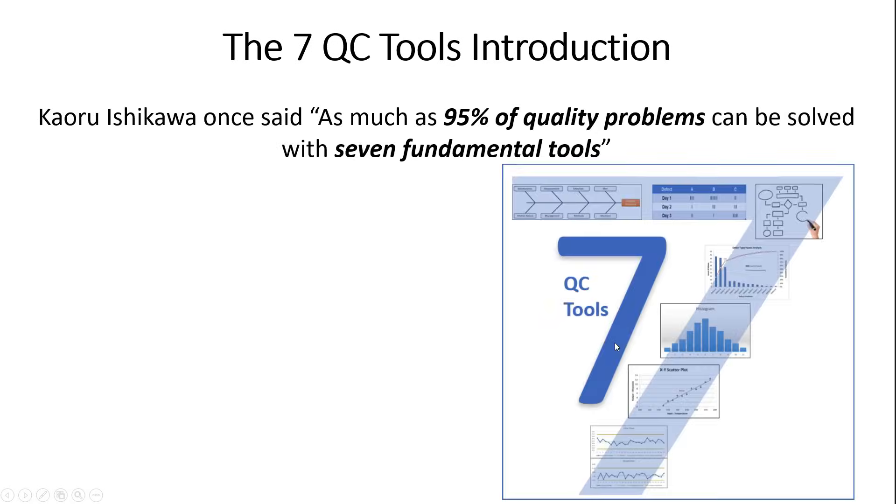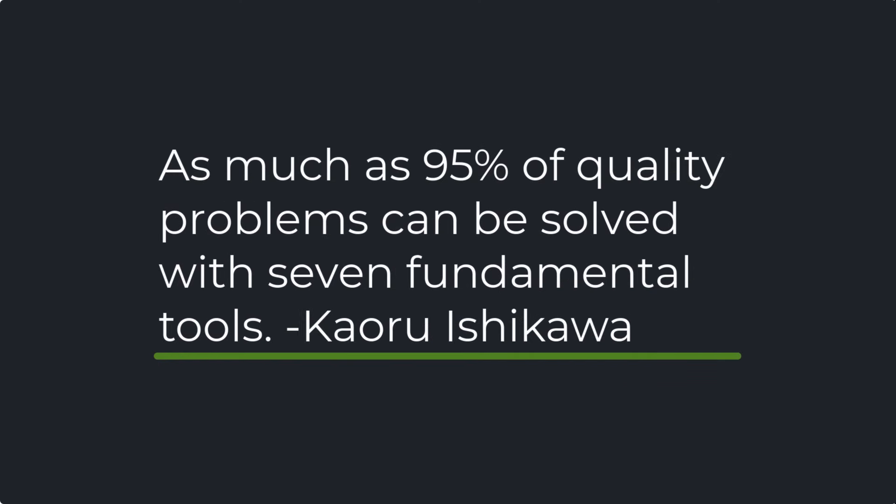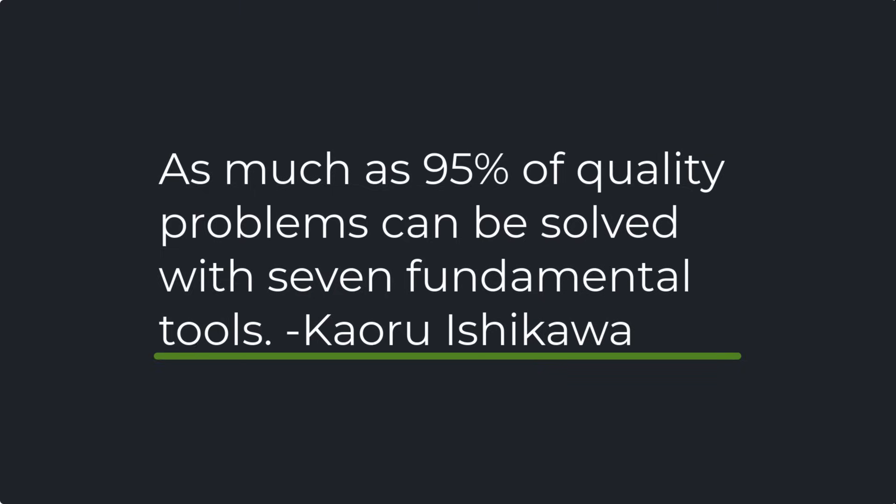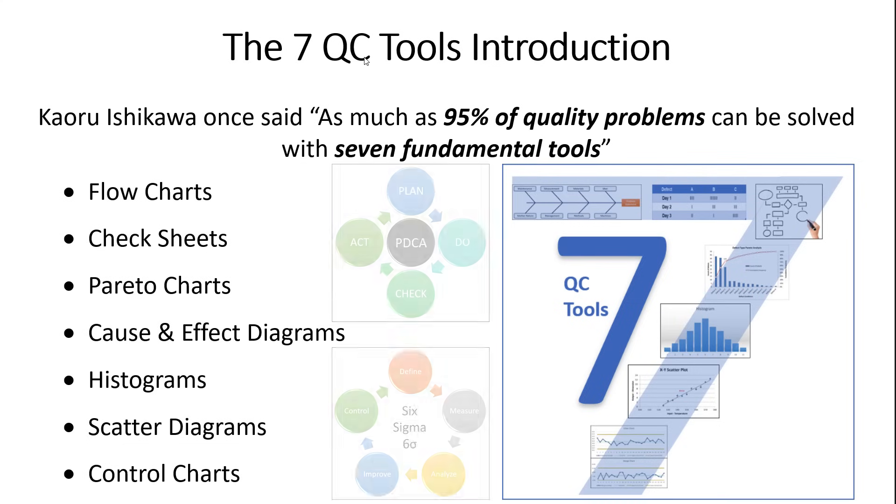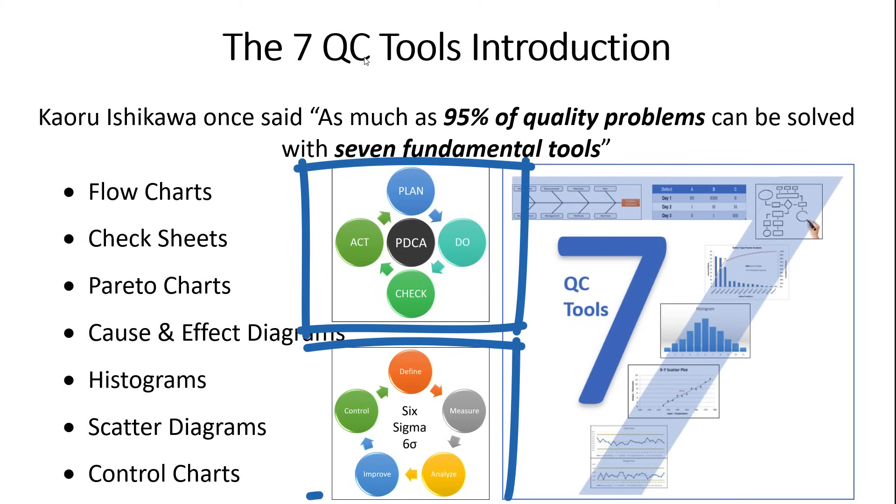So the seven QC tools. I love this quote from Keoru Ishikawa, who said, as much as 95% of quality problems can be solved with seven fundamental tools. And I absolutely agree with that. I think these tools are probably the seven most powerful tools, whether you're talking about green belt or black belt or quality engineering.